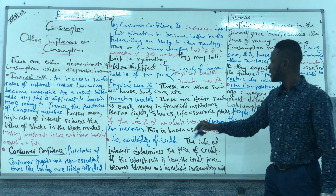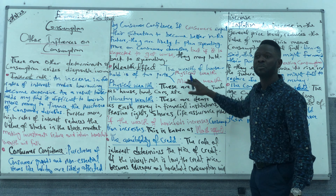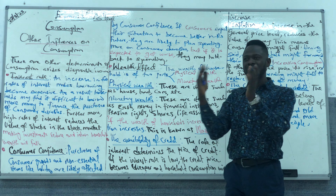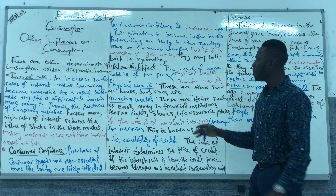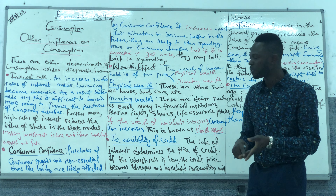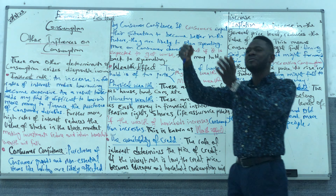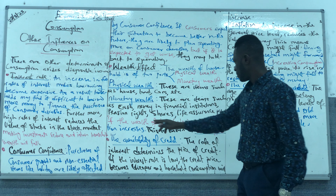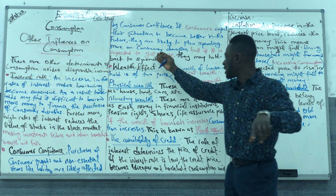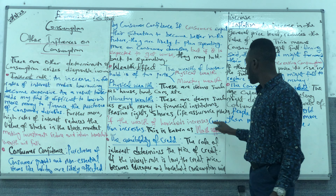The third factor is the wealth effect. The wealth of the household is of two parts: physical wealth and monetary wealth. Physical wealth refers to your house, cars, and land. Monetary wealth refers to your shares, pension rights, life assurance policies, and the cash or money you have with financial institutions. So if the wealth of the household increases — whether physical or monetary — consumption will increase. That is what we call the wealth effect.